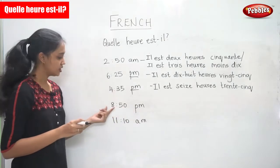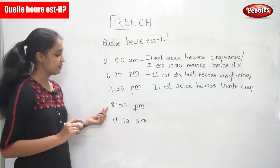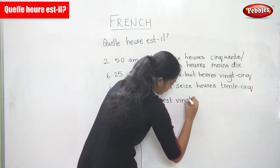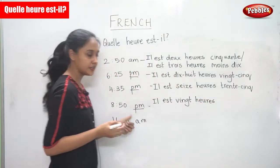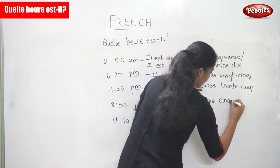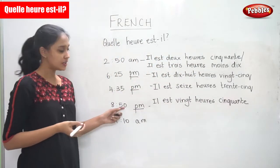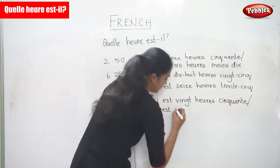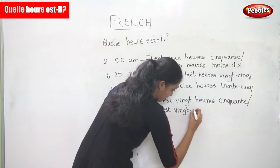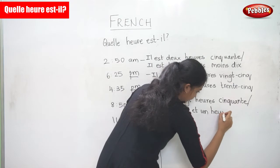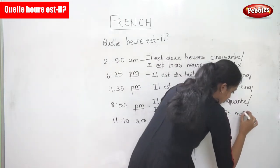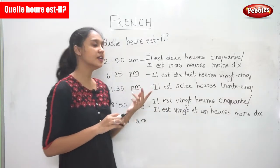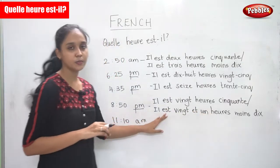Eight fifty PM. Again in the question it is given PM, so eight would be twenty hours. So 'il est vingt heures.' And fifty — cinquante. Now there is another way to write this: you can say 'il est vingt et une heures moins dix' — twenty-one hours minus ten. So this is another way of writing this.